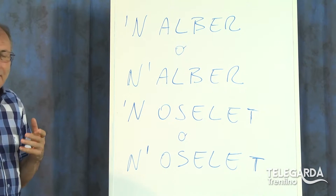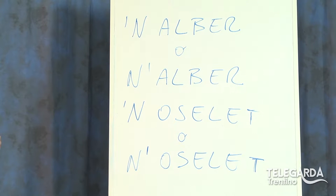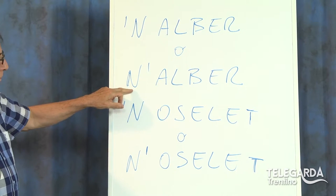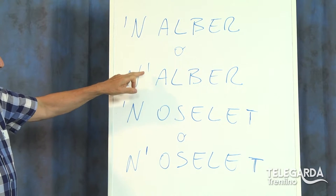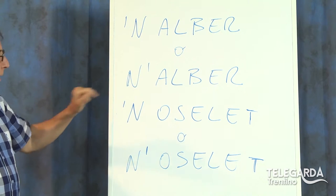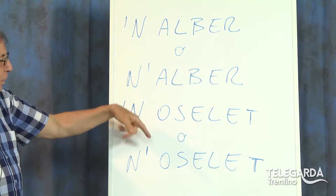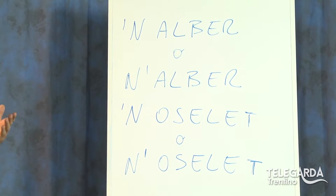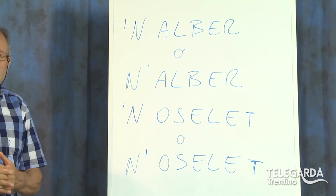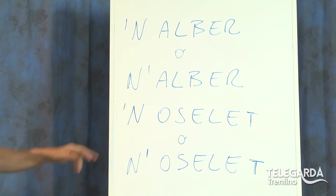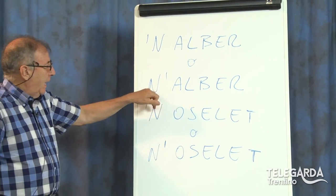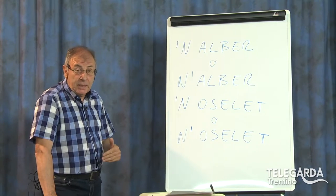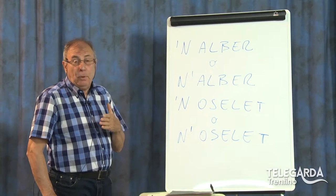In realtà, se noi guardiamo la maggior parte dei poeti dialetali trentini, usa invece questa forma. N'alber — in realtà con i nomi maschili l'apostrofo non ci andrebbe perché è il troncamento. La maggior parte dei poeti usa questa forma: N'alber con l'apostrofo dopo, N'oselet con l'apostrofo dopo, potrei dire N'om con l'apostrofo dopo.